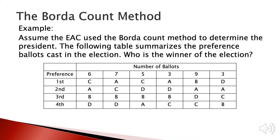For example, in the previous committee problem, the election was held using the Borda count method, and the preference ballots are listed in the given table. It means that there are six voters taking C as the first preference, A as the second, B as the third, and D as the last. And there are seven voters taking A as the first preference, C as the second, B as the third, and D as last. Each column represents the number of voters sharing the same preference list. The problem is to determine who is the winner by the Borda count method.